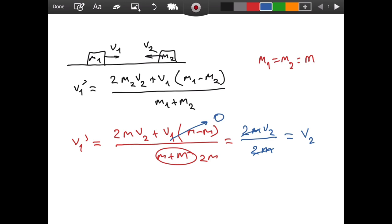This is telling us that in case of an elastic collision where the masses of the objects are the same, the final velocity of the first object is going to be equal to the initial velocity of the second object.